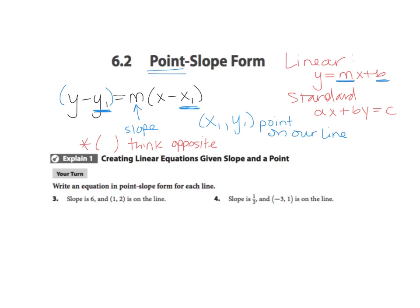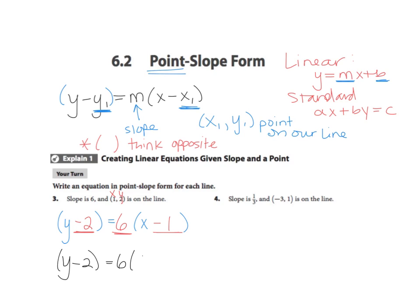Down here we've got example three: the slope is 6 and the point is (1, 2), and they want us to write an equation. Pay attention — I'm filling numbers into three spots. M is my slope, so in the first spot I'm going to put 6. Inside parentheses, think opposite: x is 1 and y is 2, so in my y parentheses I write minus 2, and for x I write minus 1. Your final equation is y minus 2 equals 6 times (x minus 1).